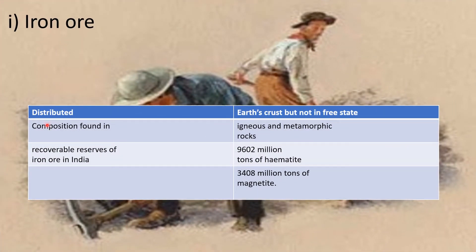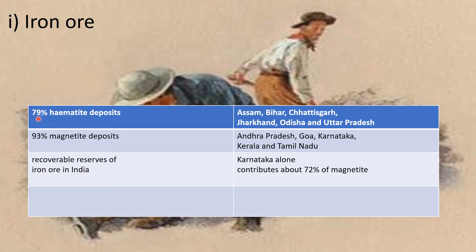Iron ore is found in the earth's crust. It is found in igneous and metamorphic rocks. India has reserves of 9,602 million tons of hematite and 3,408 million tons of magnetite iron ore. Hematite is found 79% in Jharkhand, Chhattisgarh, Odisha, and Uttar Pradesh. Magnetite is found 93% in Andhra Pradesh, Goa, Karnataka, Kerala, and Tamil Nadu. Karnataka alone produces 72% of magnetite.